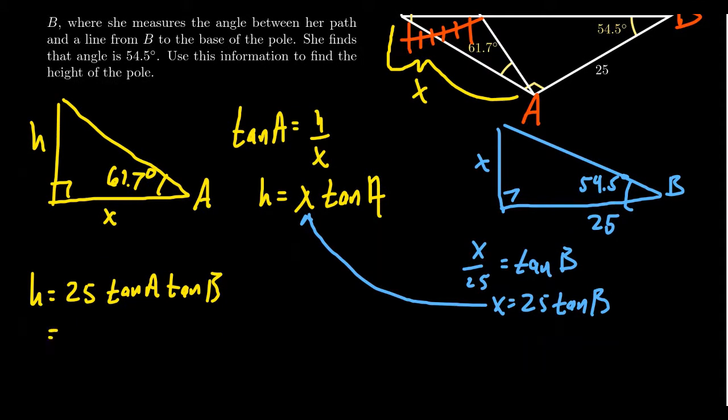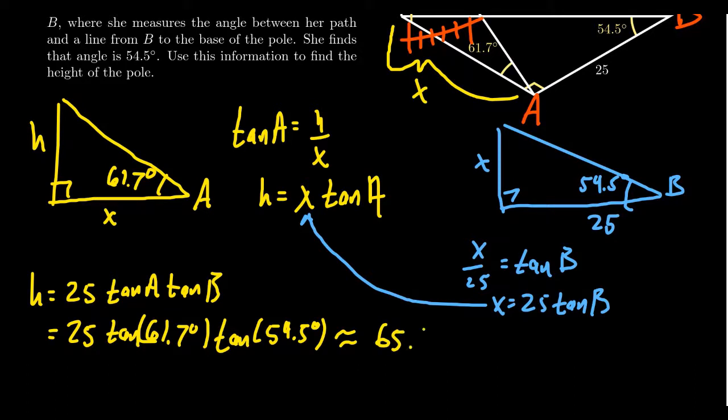So the exact answer for H will be 25 times tan A, which was 61.7 degrees, times tan B, which was 54.5 degrees. Put these in your calculator. Make sure your calculator is in degree mode when you do that calculation. And if we round to the nearest 0.1 foot, we see that 25 times tan 61.7 degrees times tan 54.5 degrees turns out to be 65.1 feet, which would be the approximate height of the flagpole.